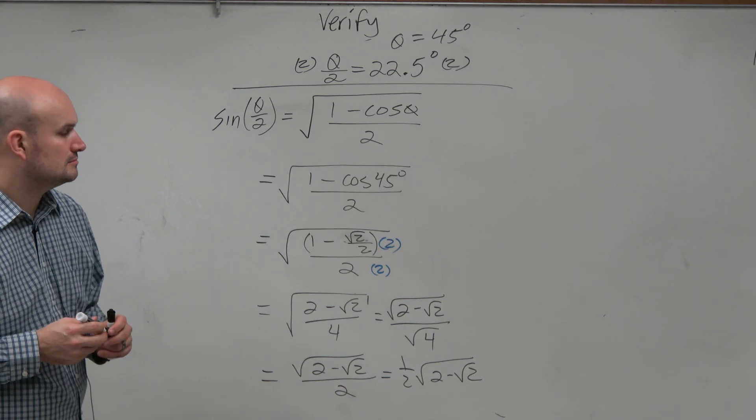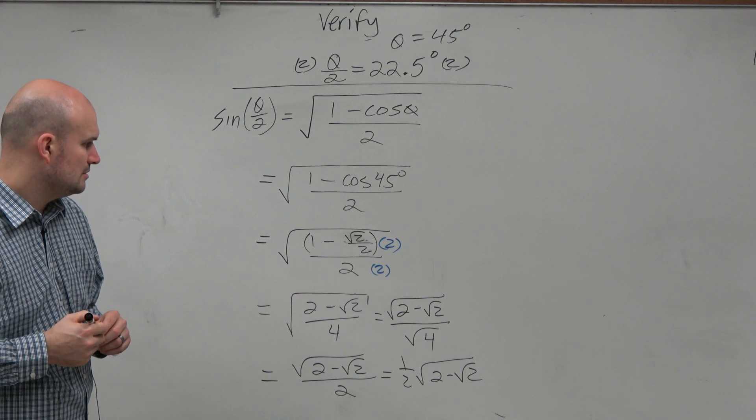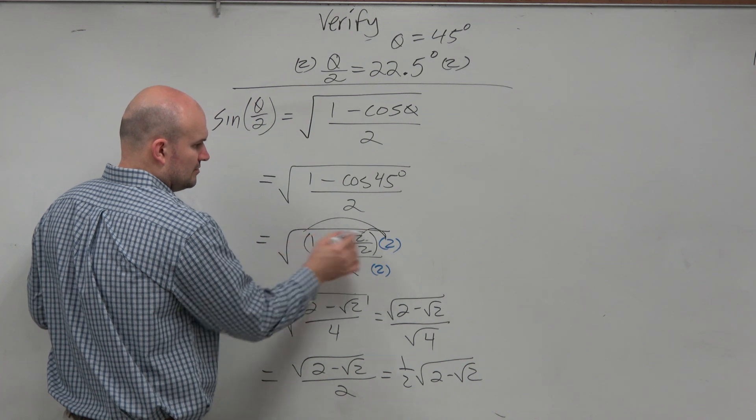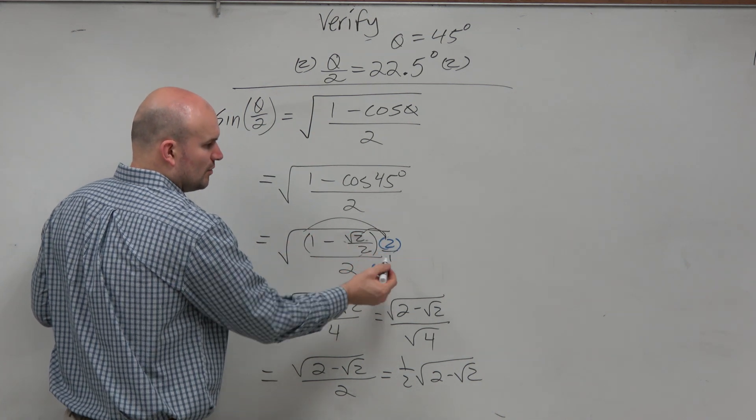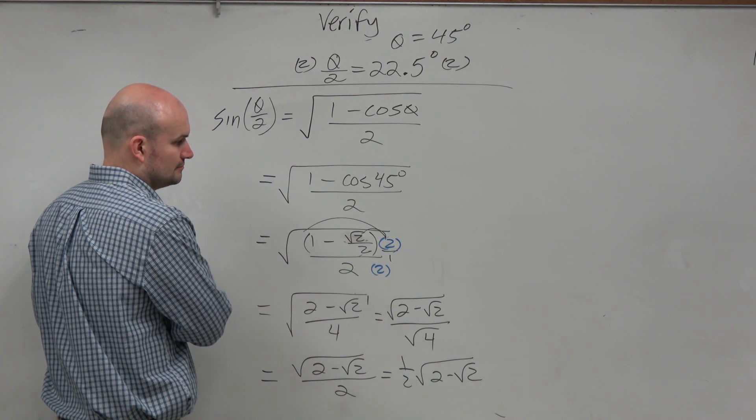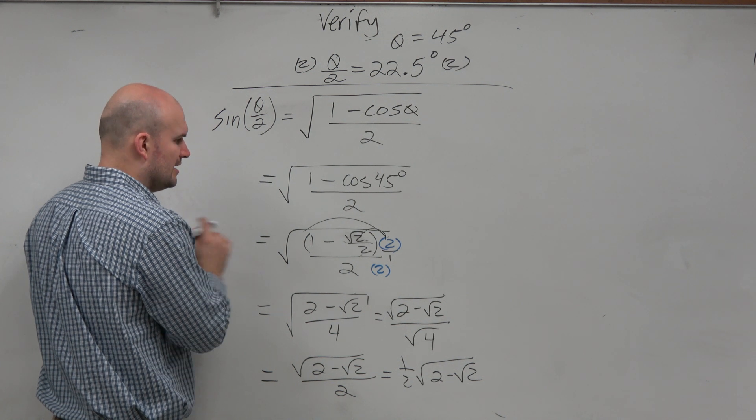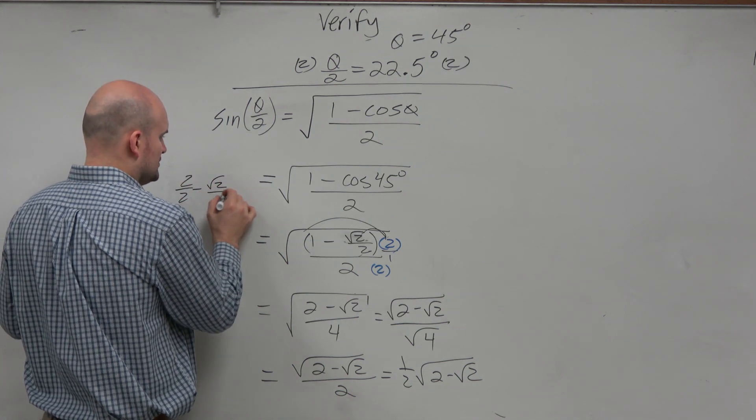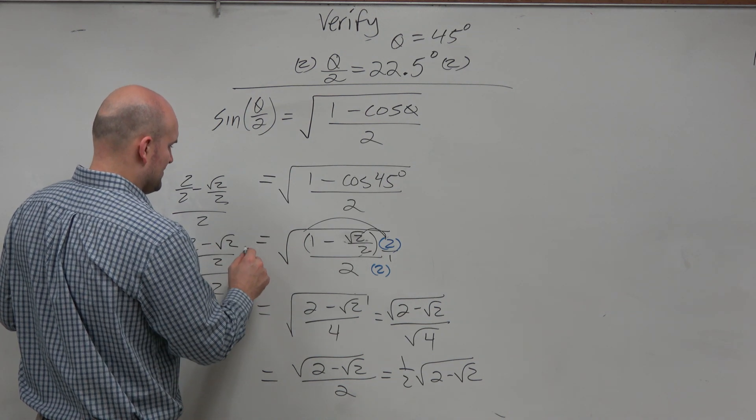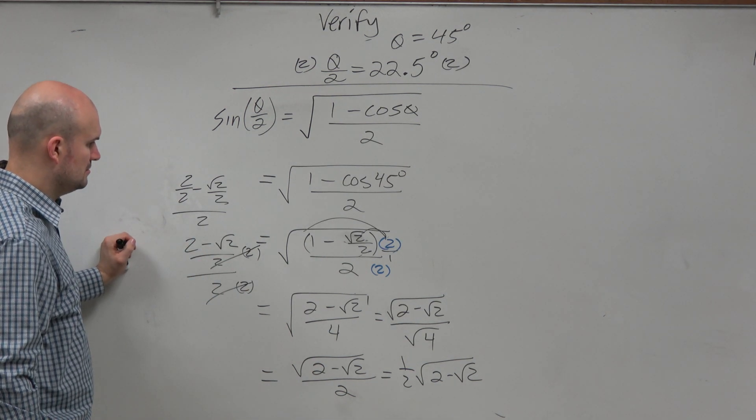A student asks: wouldn't it be 2 minus 2 square root of 2 over 4? No, because when you multiply this 2 times both terms, the 2's divide out, because this is 2 over 1. What I did, I made the 1 into 2 over 2. So I got 2 minus the square root of 2 over 2, and then I divided that. It would be 2 over 2 minus square root of 2 over 2, divided by 2. So when you multiply the top and the bottom by 2, you get 2 minus the square root of 2.